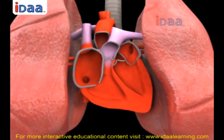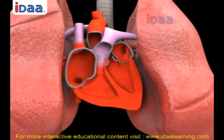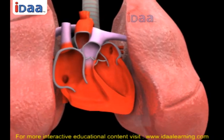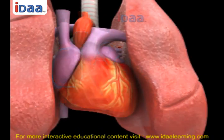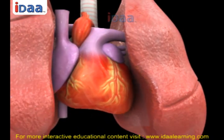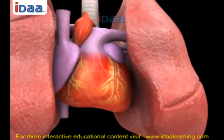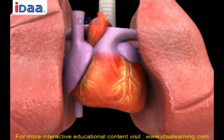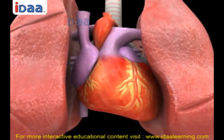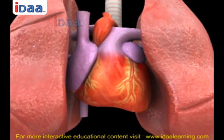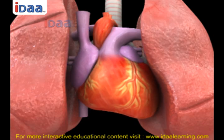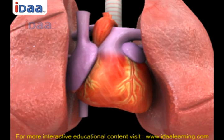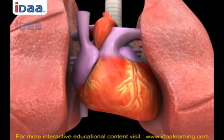Heartbeat. The walls of the heart are made up of muscles. Muscles exhibit contractions and relaxations rhythmically at regular intervals. These contractions and relaxations are responsible for heartbeat. One contraction of the muscles followed by its relaxation is called heartbeat. Due to this rhythmic beating of the heart, circulation of blood and transport of substances to various parts of the body is possible.